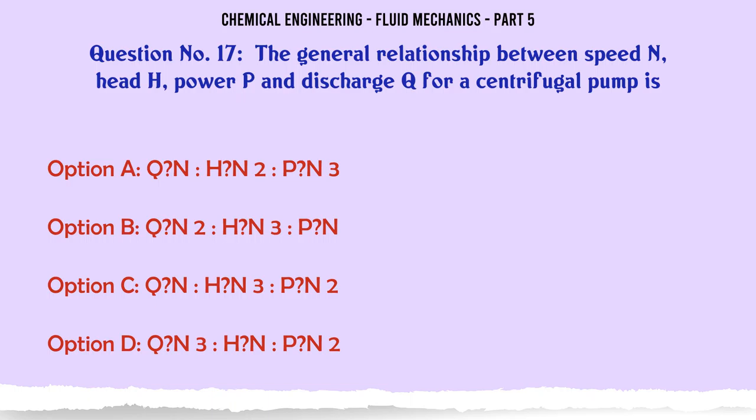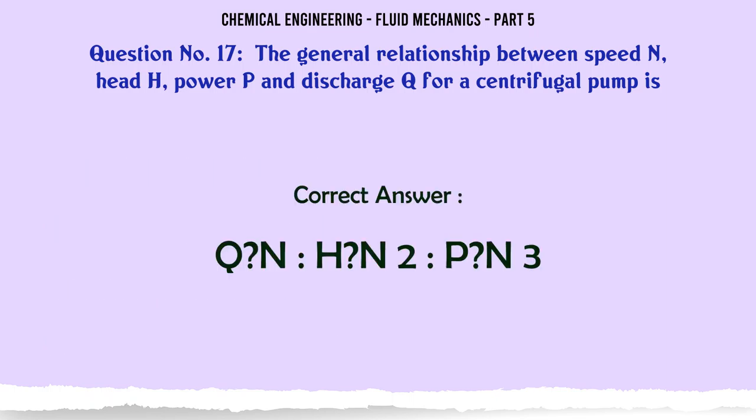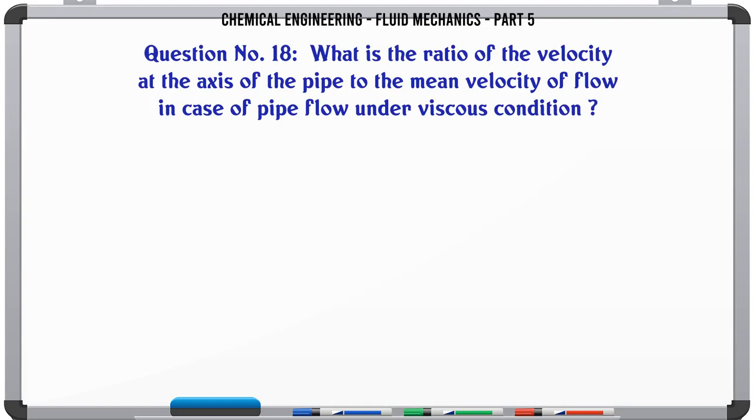The general relationship between speed n, head h, power p, and discharge q for a centrifugal pump is: a) q∝n, h∝n², p∝n³, b) q∝n², h∝n³, p∝n, c) q∝n, h∝n³, p∝n², d) q∝n³, h∝n, p∝n². The correct answer is q∝n, h∝n², p∝n³.